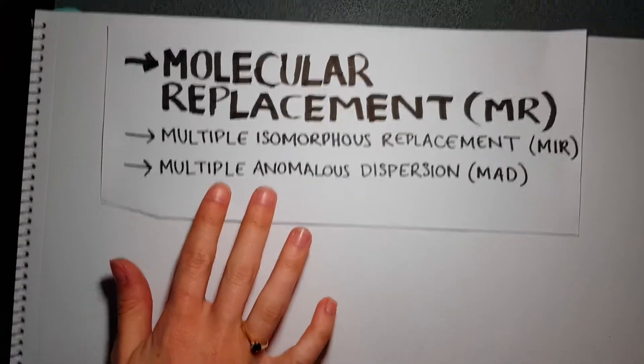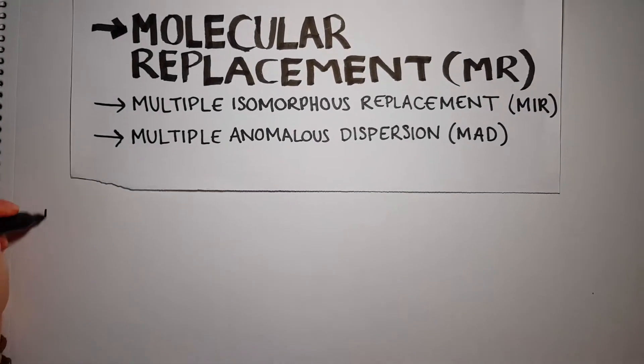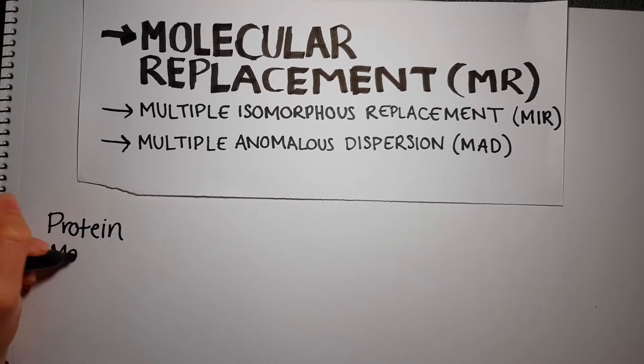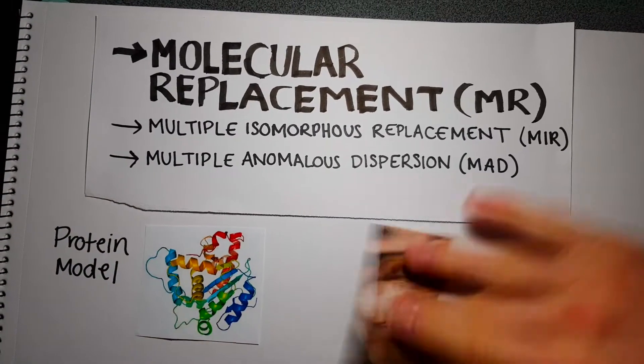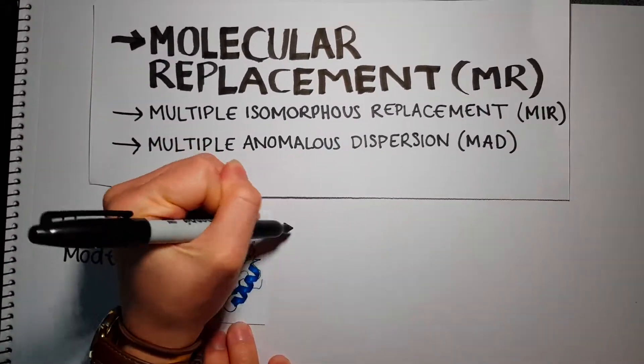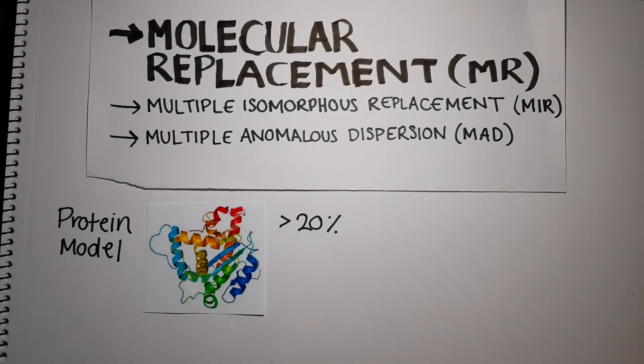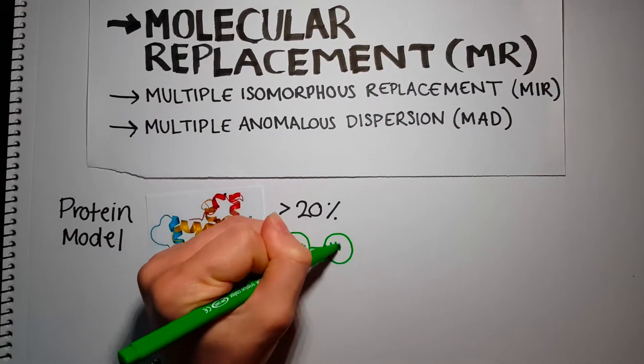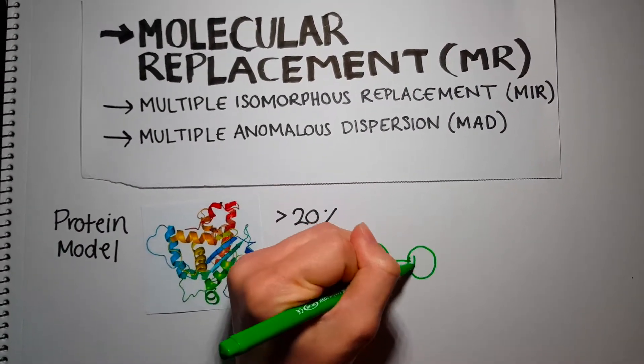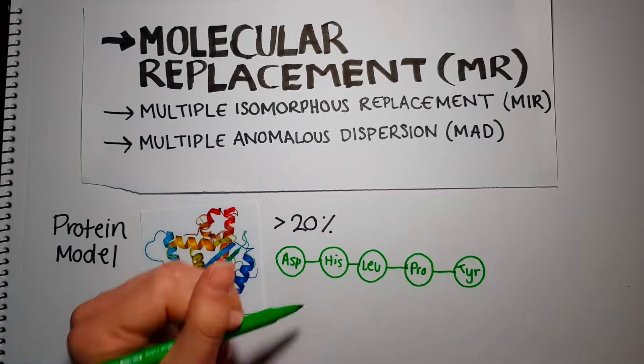One solution to the phase problem is molecular replacement. This method uses a protein model. A protein with over 20% identical amino acid sequence to your protein of study will usually have the same fold and can therefore be used as a model.